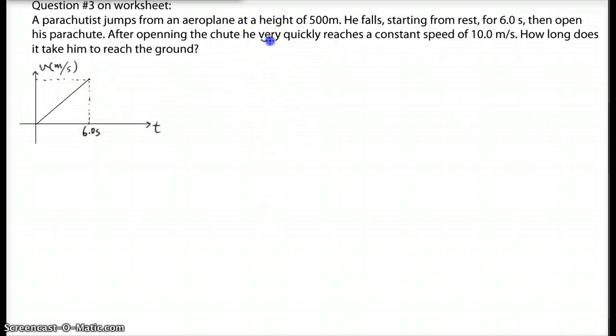And then after this, he opens his parachute and quickly reaches a speed. So it says very quickly reach a speed, so you can assume it takes no time to have a quick transition to a constant speed. So the velocity is going to drop from this velocity to 10 meters per second.